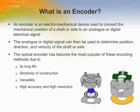An encoder is an electromechanical device used to monitor the motion or position of an operating mechanism and to translate that information into a useful output. The analog or digital output signal can then be used to determine position, direction and velocity of the shaft or axle.